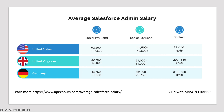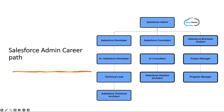A senior admin in the UK makes £51,000 to £64,000 plus, and on a contract rate it is almost £300 to £510 per day. In Germany, the average is €46,000 to €62,000 for a junior admin, and a senior admin makes €62,000 to €78,000. To learn more about salary surveys for different Salesforce positions, check out the blog post. The Salesforce admin role is the base of most Salesforce career options.